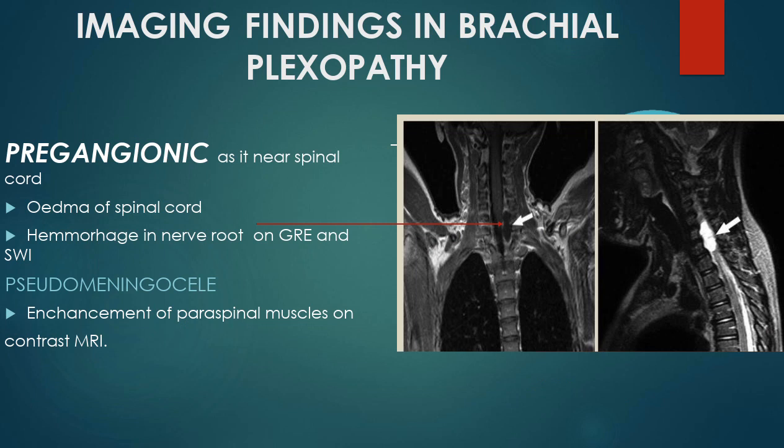In preganglionic injury, which is near the spinal cord, there will be edema of the spinal cord with hemorrhage in the nerve root showing blooming on GRE and susceptibility-weighted imaging. Characteristically, there will be pseudomeningocele formation — appearing as cystic T2/STIR hyperintensity near the nerve root. Pseudomeningocele formation is the hallmark of preganglionic brachial plexopathy. The image here shows pseudomeningocele formation, which is T2 bright. As an indirect sign, enhancement of the paraspinal muscles can also be seen.